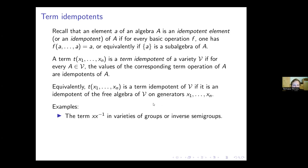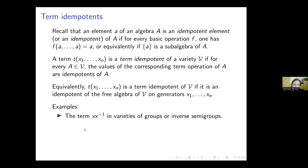Some examples: in varieties of groups, the term x times x-inverse produces the identity element in every algebra, which is an idempotent. So this term is a term idempotent of every variety of groups, and the corresponding term operation is always constant. But the same term produces a term idempotent in varieties of inverse semigroups such that the corresponding term operation is not always constant — it assumes different values.